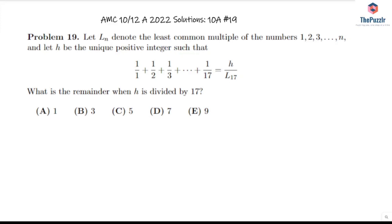We have problem number 19 from the 10A. Let L_n denote the least common multiple of the numbers 1 through n, and let h be the unique positive integer such that 1 + 1/2 + 1/3 all the way to 1/17 equals h over L_17. What is the remainder when h is divided by 17?